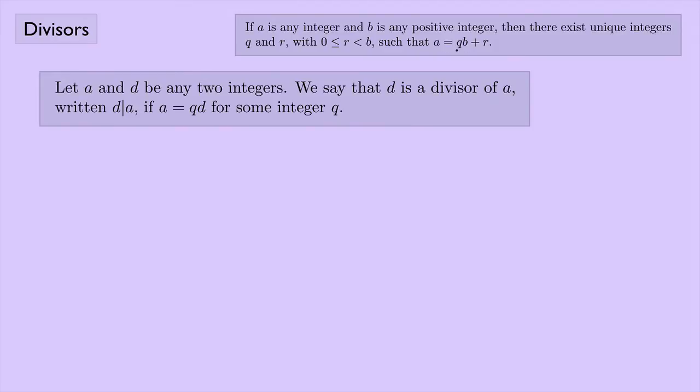We use the letter D instead of B because it starts with D like divisor. We let A and D be any two integers, and we say that D is a divisor of A, written D|A, if A = QD for some integer Q.